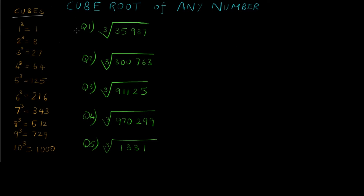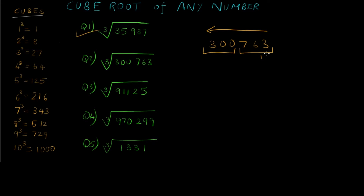Now let's move to question number 2. We have to find out the cube root of 300763. Starting from the right we make groups of 3: group number 1 is 763 and group number 2 is 300. For group number 1 we look at the units place, which is 3. The cube that has units digit 3 is 343, which is 7 cubed. So the first digit of our answer is 7.